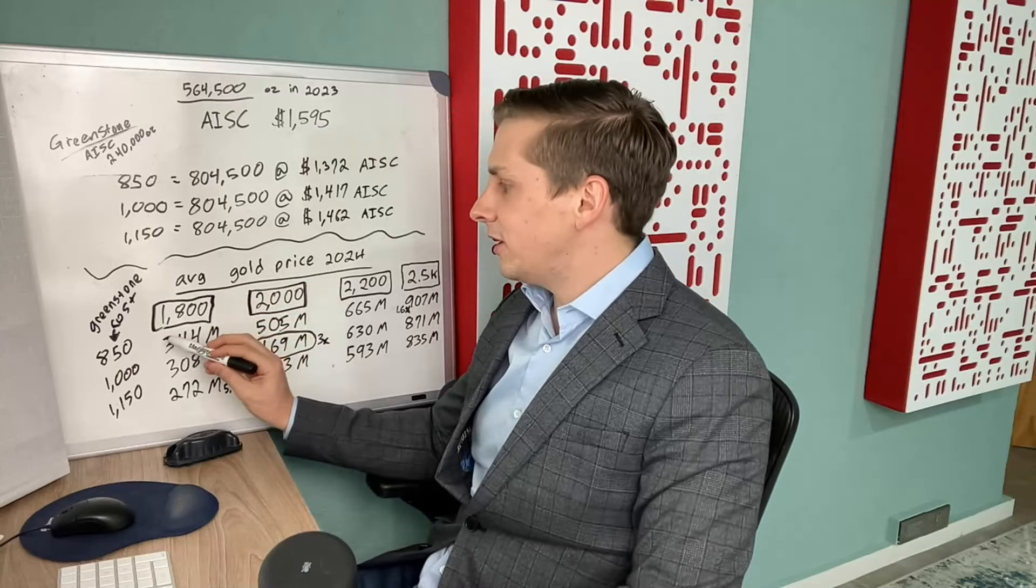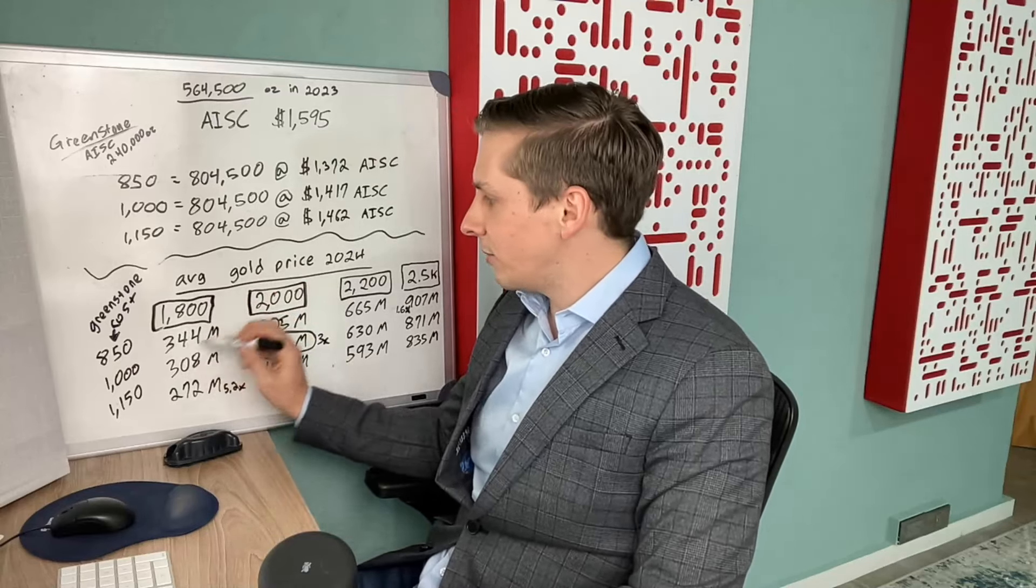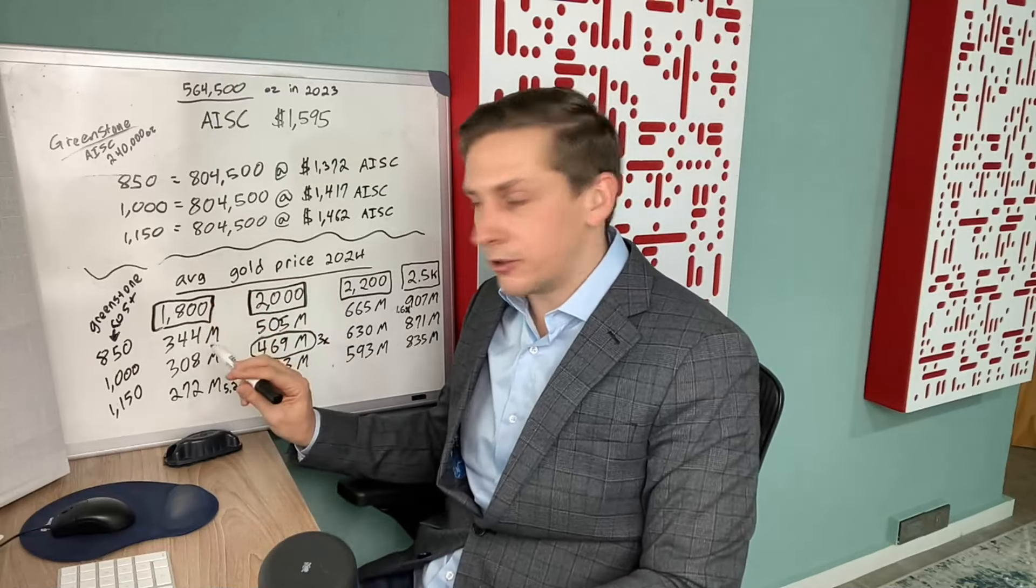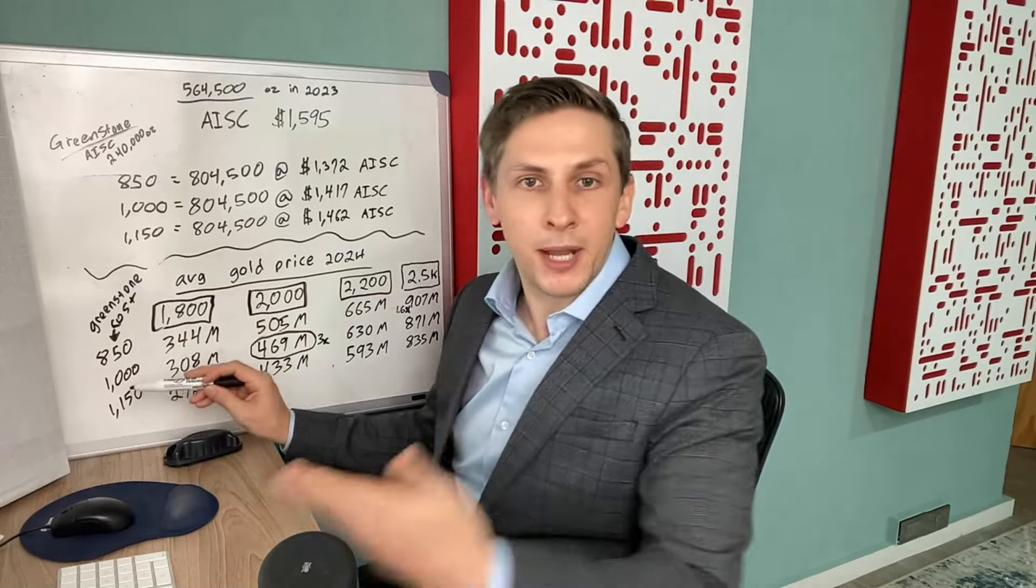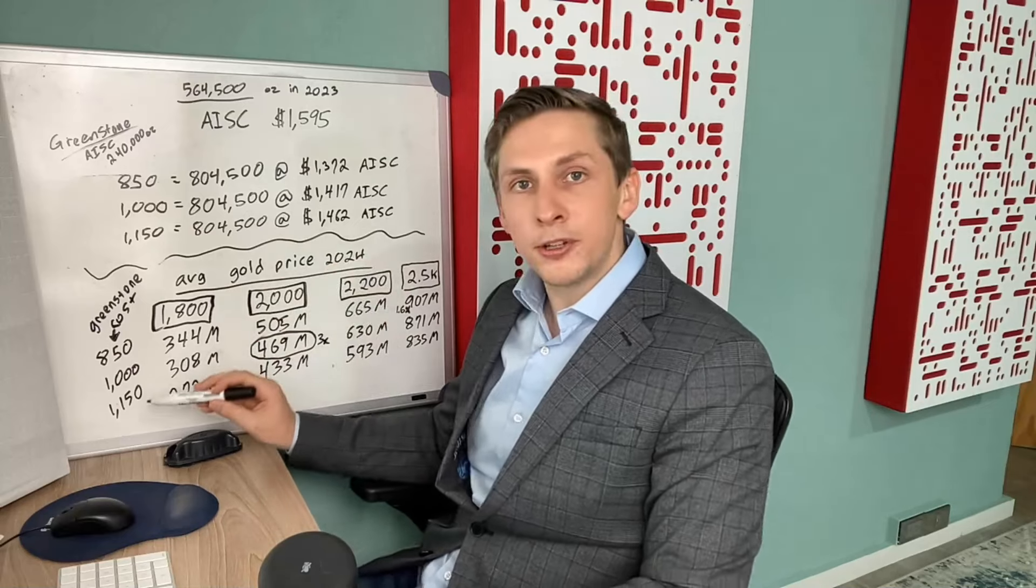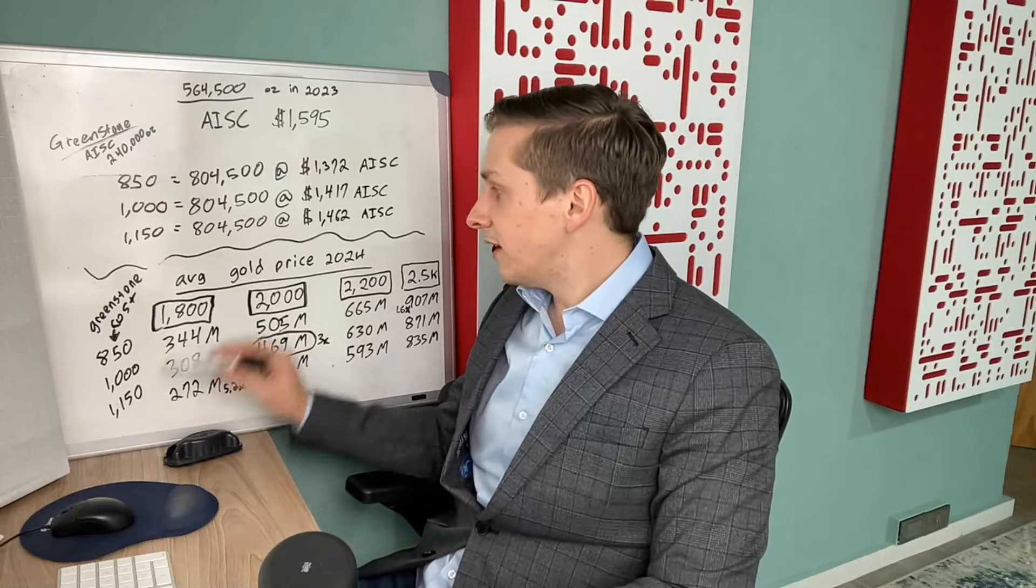If gold is $1,800 an ounce and Greenstone comes in producing at $850 an ounce, the company is going to have cash flow of $344 million a year. Worst case, Greenstone comes in at a high cost of $1,150, which would still be their best mine by the way because all of their other mines have a higher cost than that.